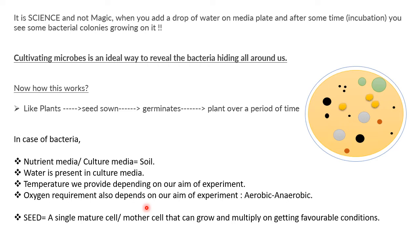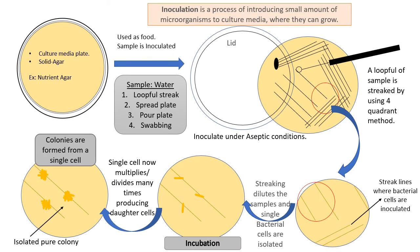Oxygen requirement also depends on our aim or the type of bacteria we are handling. It can be aerobic — meaning requiring oxygen — or anaerobic, meaning not requiring oxygen for growth. The seed equivalent here is a single mature bacterial cell, or the mother cell, that has the ability to grow and multiply when favorable conditions are available. This diagrammatic representation shows a plate of nutrient agar, which is solid and acts as the culture media plate.